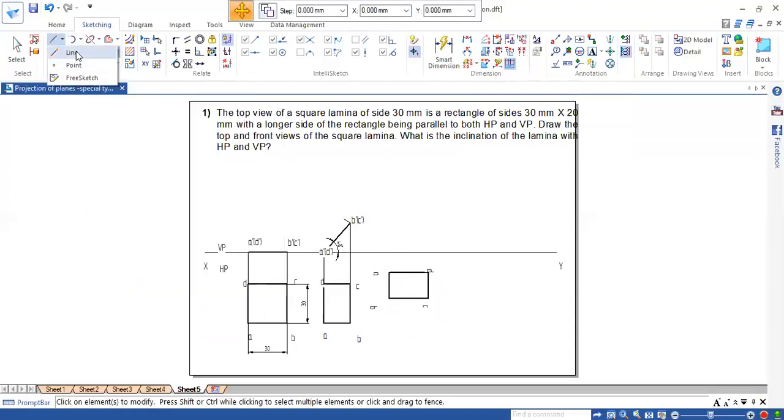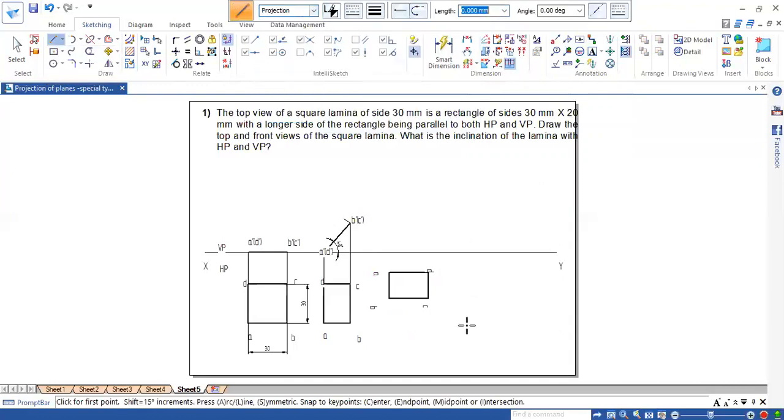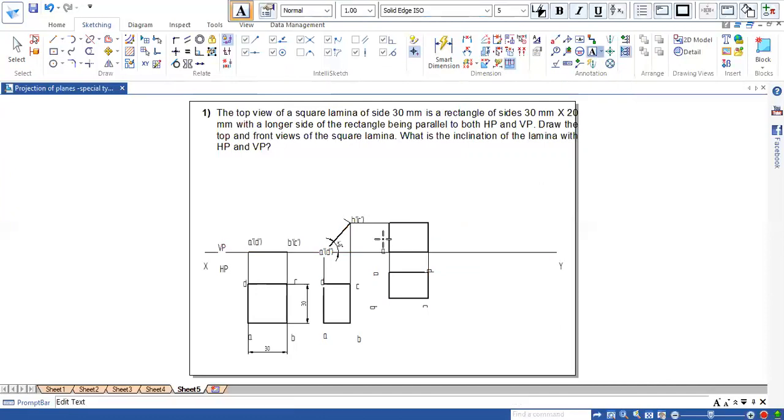Now use line projection line. Project A dash B, B dash C, C dash D, and D on the XY line. Use the visible line. A, B, C, D, and A. Now name it. So this is A dash, B dash, C dash, and D dash.